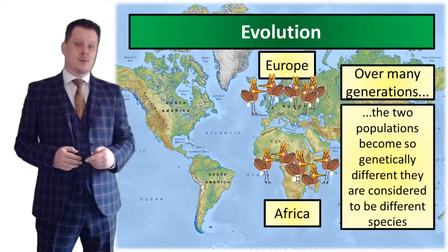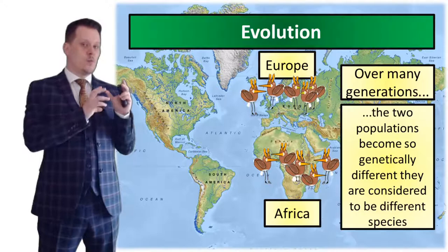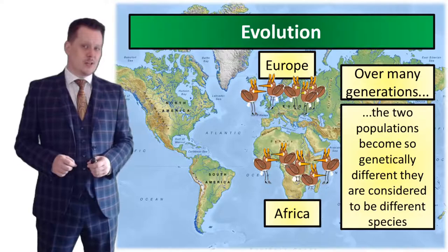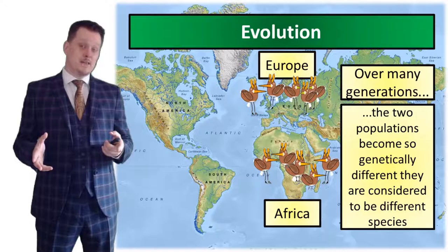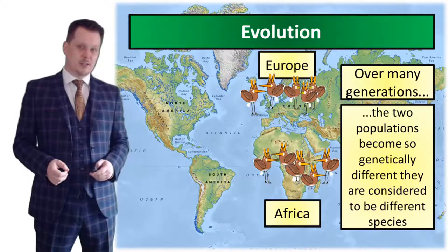If this happens over many generations, then eventually these two populations will become so genetically different that they will be considered a different species. So evolution is just one population which has been separated by some means, and then two sets of natural selection occur. When answering an evolution question, you need to say at the beginning that the populations get separated, and at the end say that over many generations they will become so genetically different they will be considered a different species.